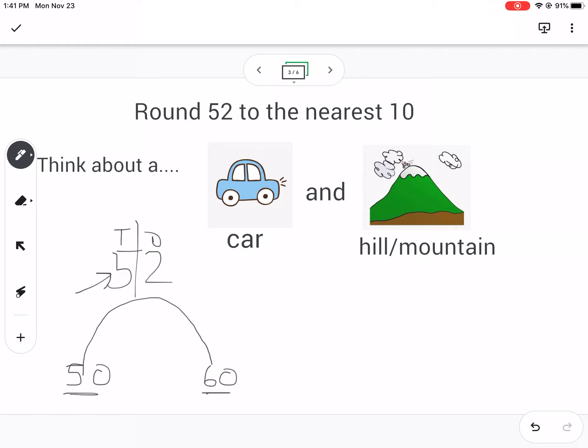And then right in the middle of 50 and 60 is 55. And now putting 52 on this hill where the car is going to go, well, it's less than 55, so it's about here. This is where 52 is. So if I let that car go, if I take my foot off the brake, it's going to fall down to 50. It's not going to magically go up the hill and back down to 60. So I know that 52 rounds to 50. I can see it on my mountain here.